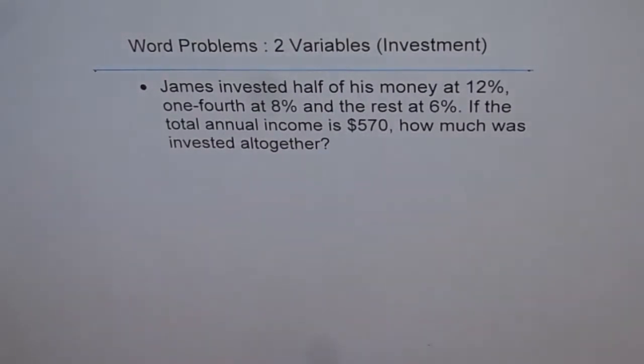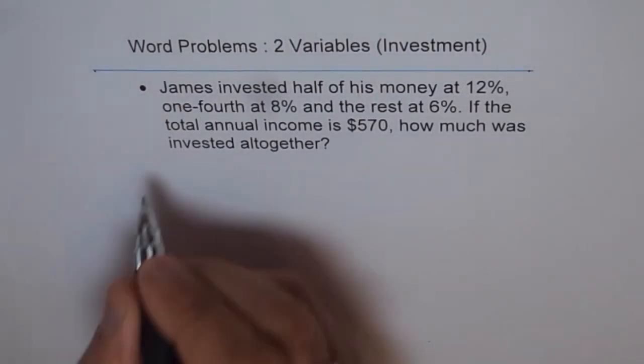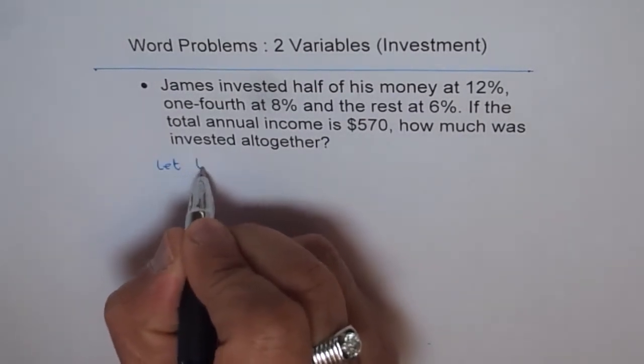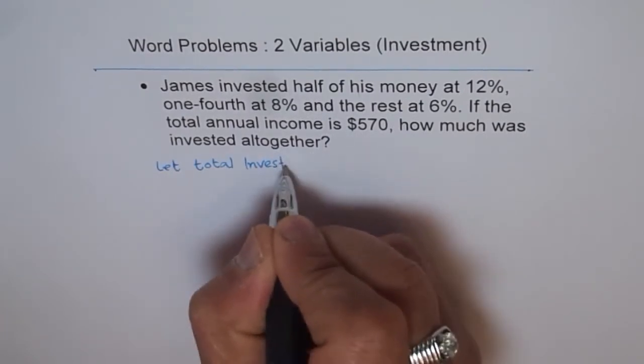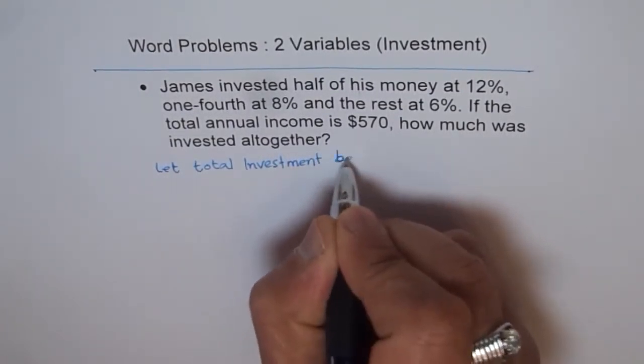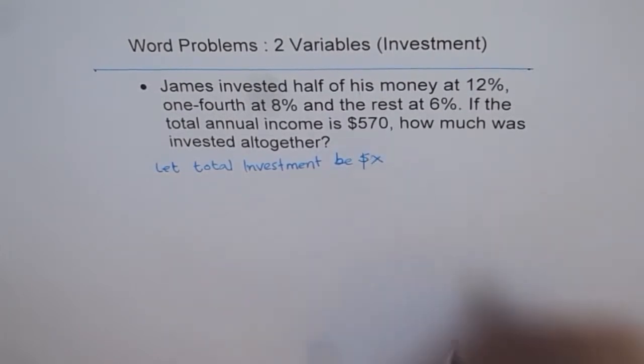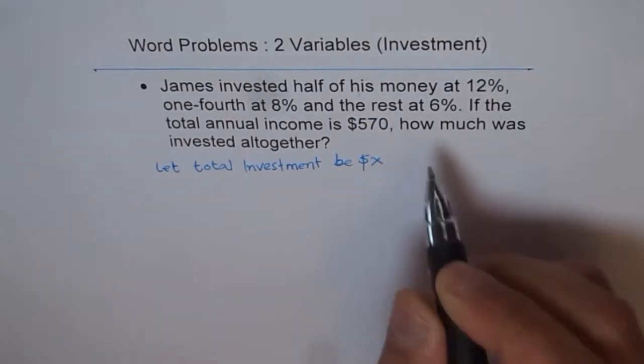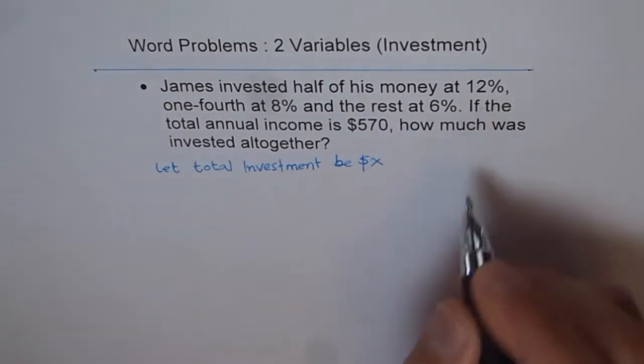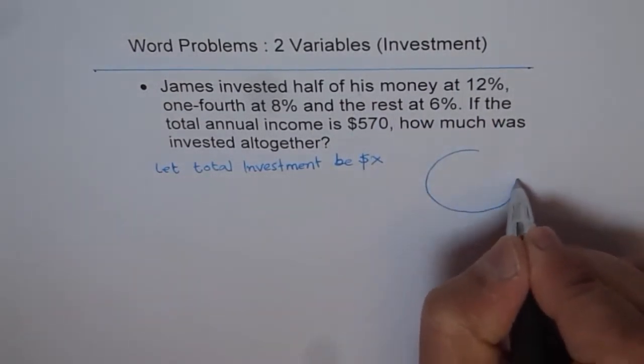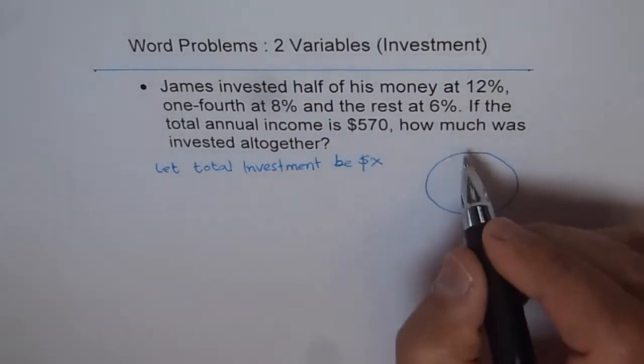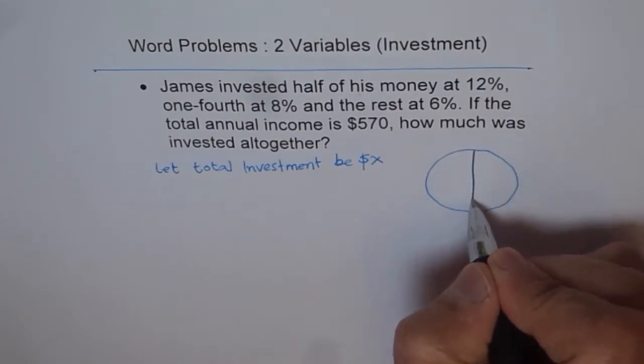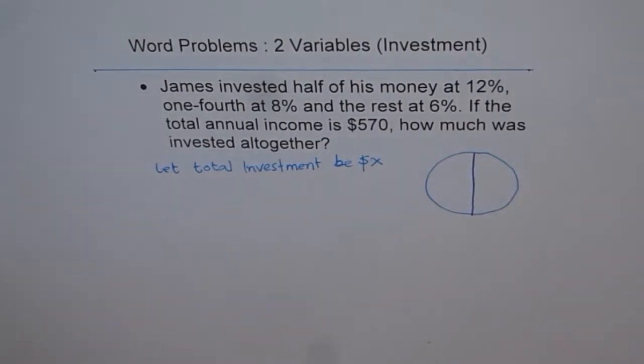So let's assume that total investment is X dollars. Let total investment be dollars X. Now see the ratio - it is half in 12%. Let's make this total, let's say this is our X, and let's try to visualize it. It says half of the money is in 12%, so this half here is 12%.